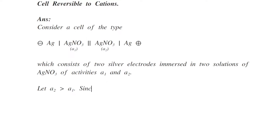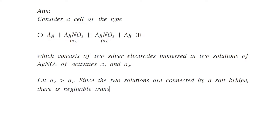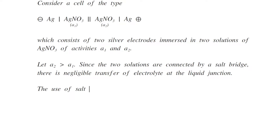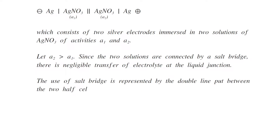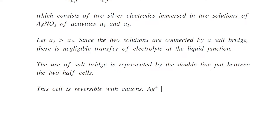Let A2 be greater than A1. Since the two solutions are connected by a salt bridge, there is negligible transfer of electrolyte at the liquid junction. The use of a salt bridge is represented by a double line between the two half cells. This cell is reversible with the cation, i.e., silver ions.